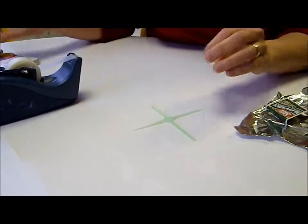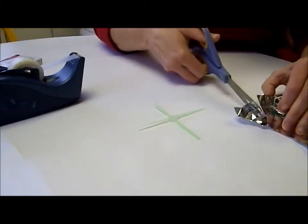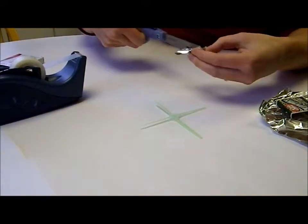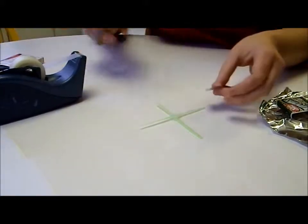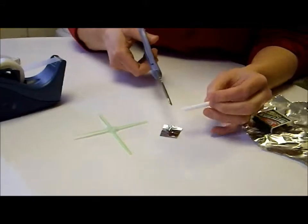Okay, now we want to make, from the aluminum foil, we want to make a nice little square that will hold two little pieces of candle. You're going to take the candle.